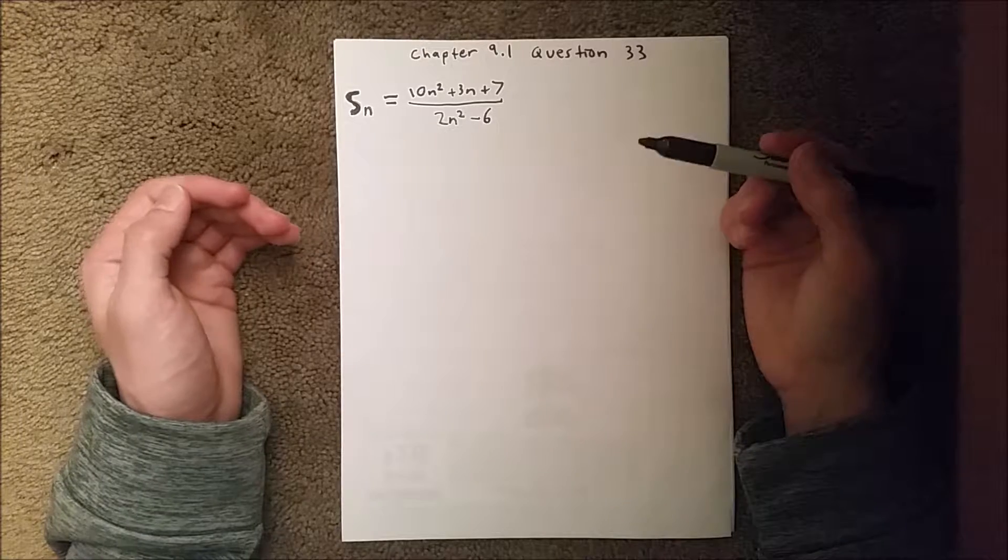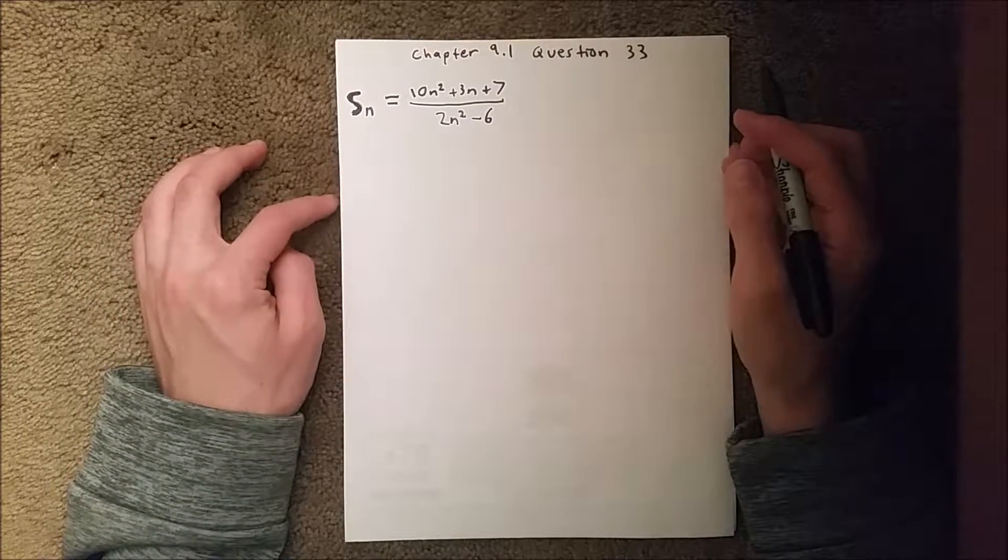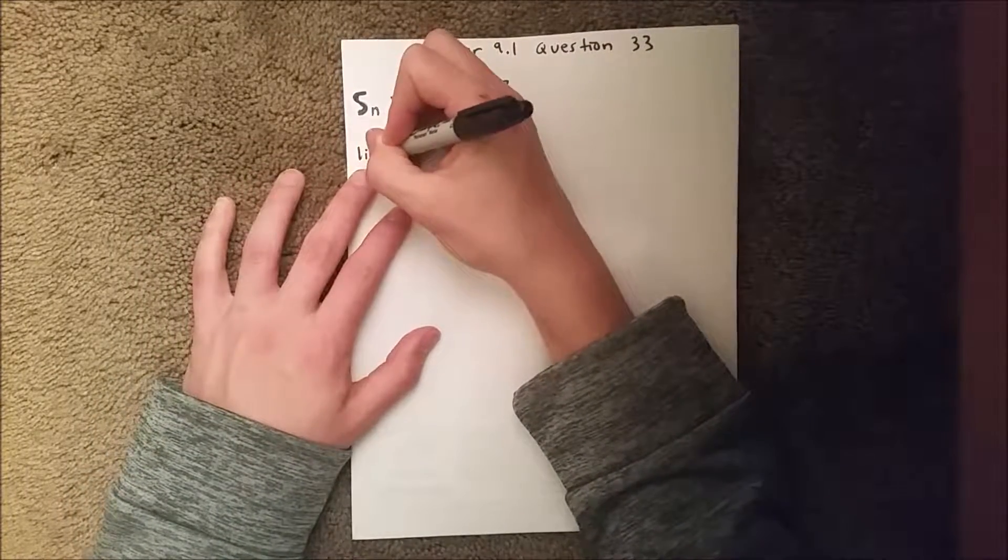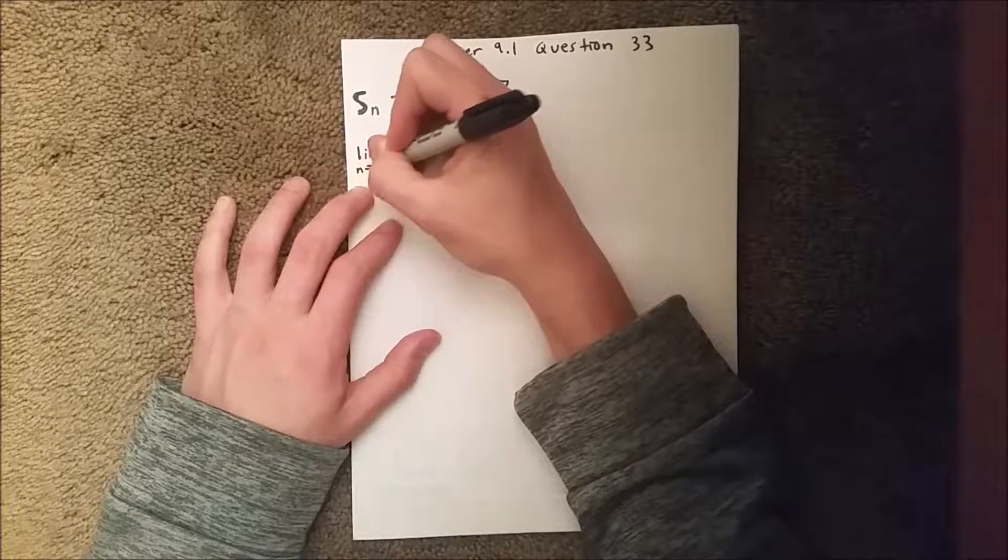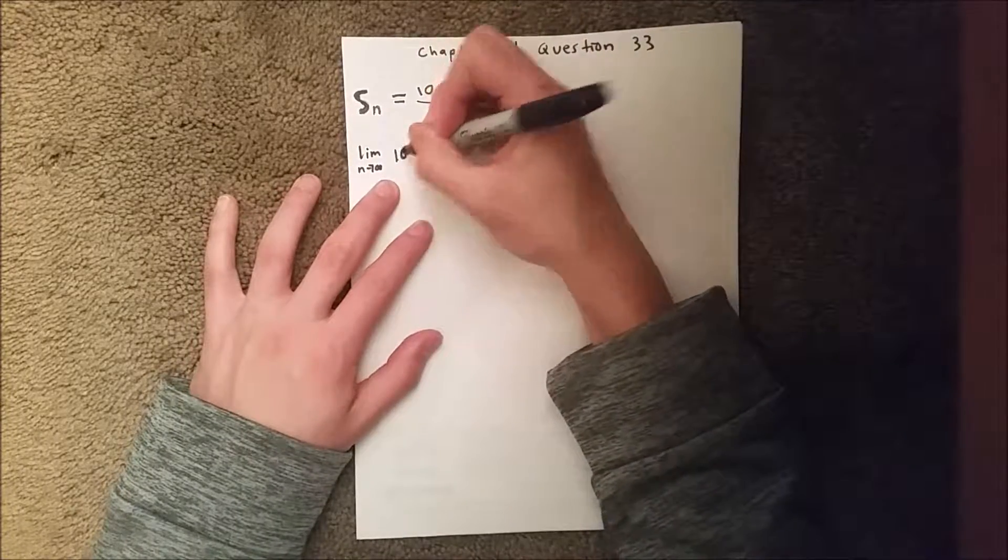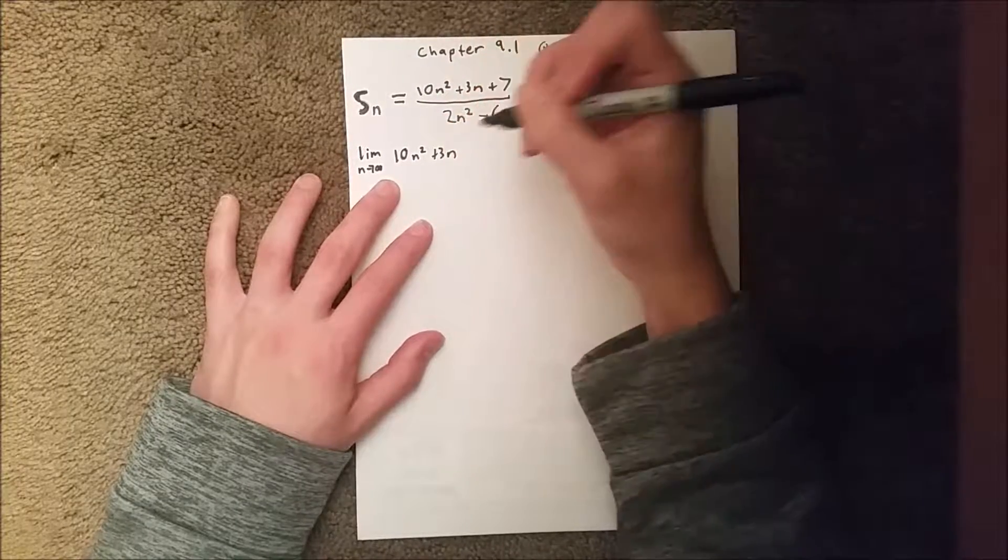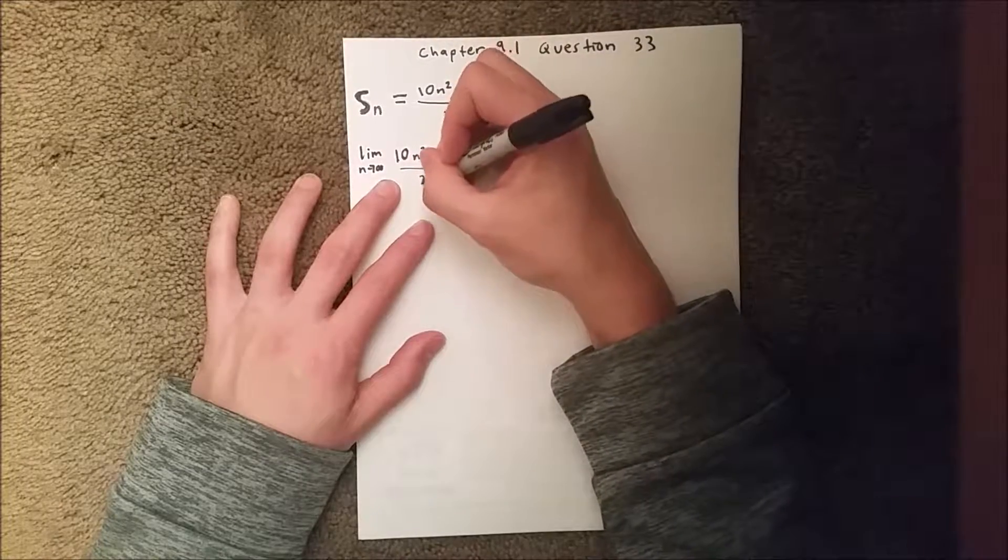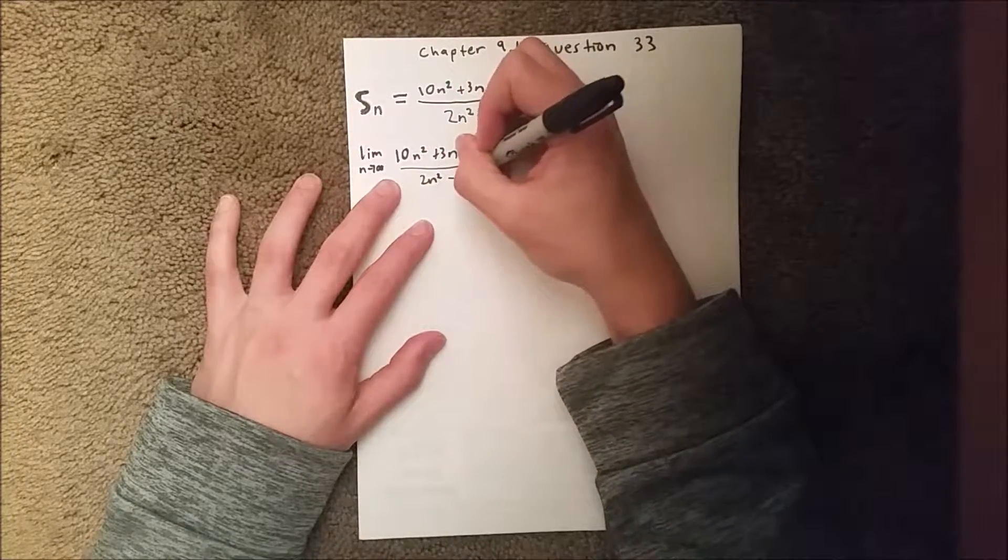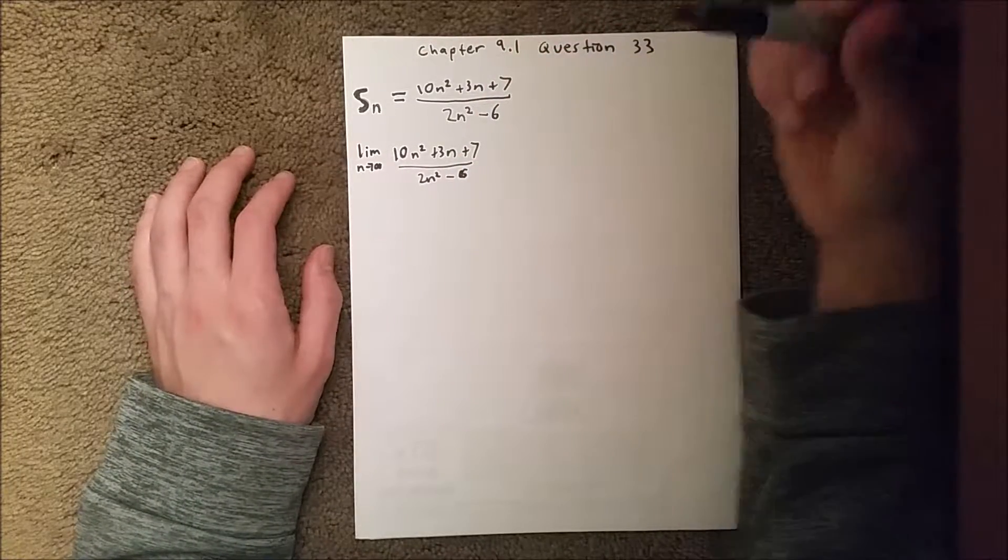So in this case we're going to take the limit as n goes to infinity of 10n² + 3n + 7 over 2n² - 6.